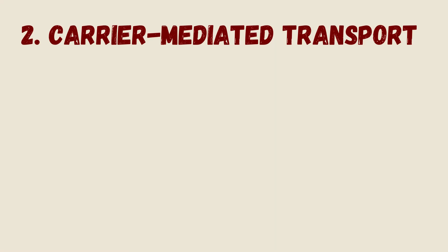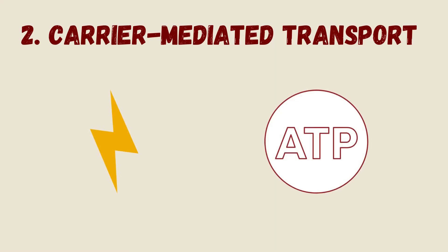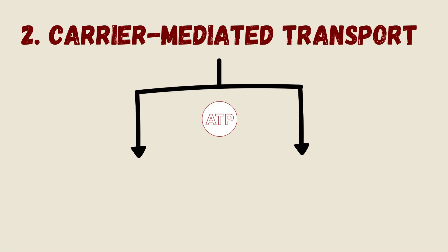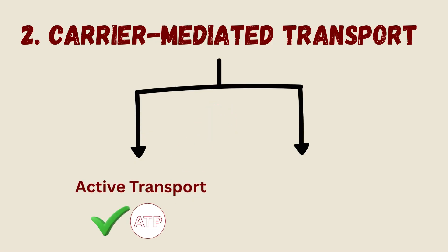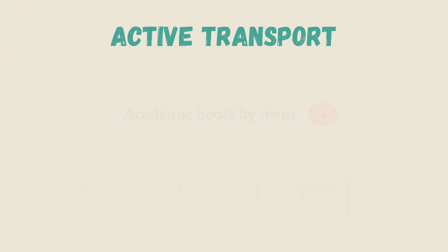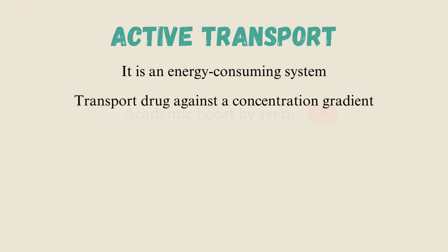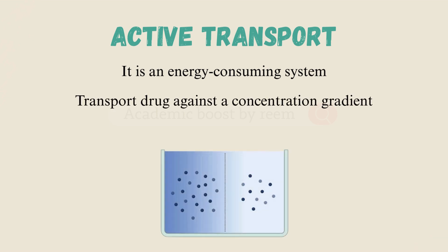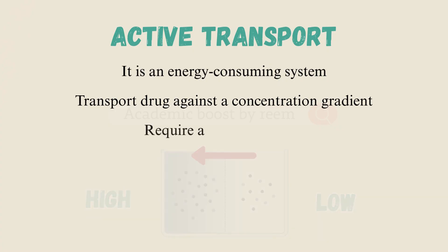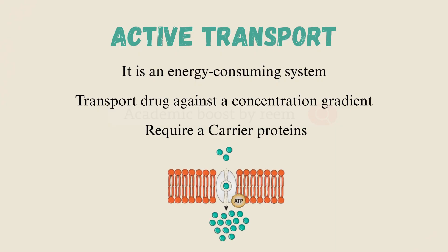Another classification for carrier-mediated transport is based on its energy requirements, dividing it into either active transport, where ATP is needed, or facilitated diffusion, where ATP is not needed. Active transport is an energy-consuming system that transports the drug against a concentration gradient, from low concentration to high concentration, and it requires a carrier protein to do that.